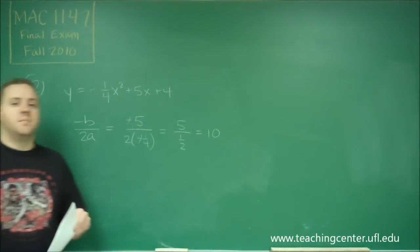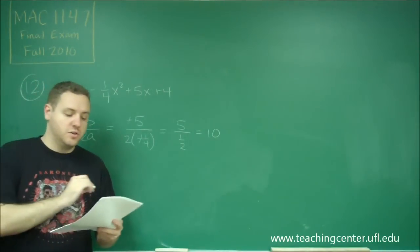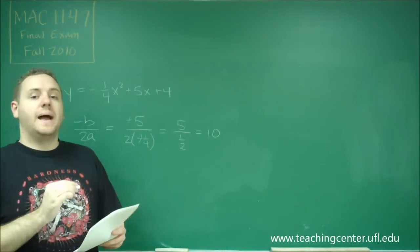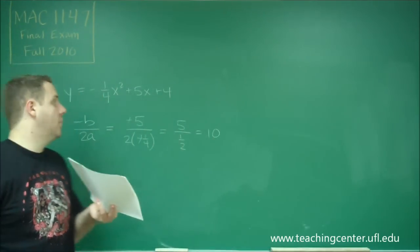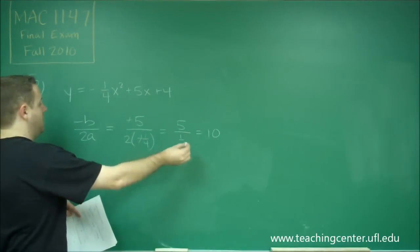So, that tells us that the maximum of this parabola occurs when x equals 10, but the maximum value is the y value at that point. And to find the y value, now that we know the x.